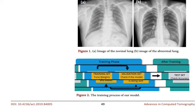We randomly separated the CT images of lungs in the database into three different sets: the training set, the validation set, and the test set. The division ratio is 6:2:2. The training set and validation set were used in the training phase, and the test set was used to check the accuracy based on Figure 2. Then we fed the two sets into the CNN model.